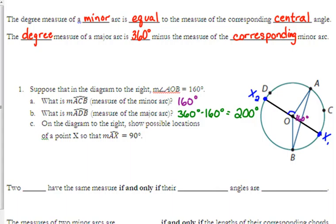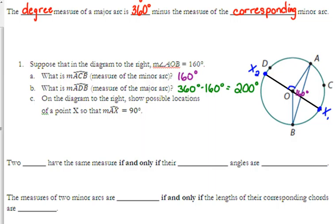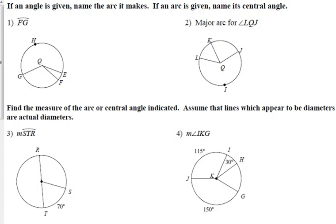Let's keep going. Two arcs have the same measure if and only if their central angles are congruent. The measure of two minor arcs are equal if and only if the lengths of their corresponding chords are equal. So we can talk about the angles and the measure of the angles and the length of the chords. And either way, they would have equal measure or they would be congruent if those angles are the same or if the chords are the same.